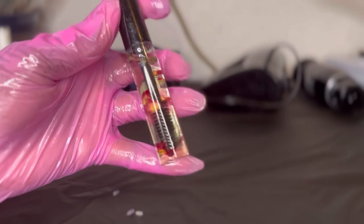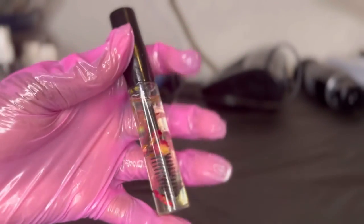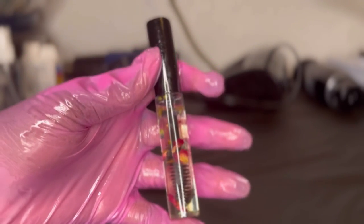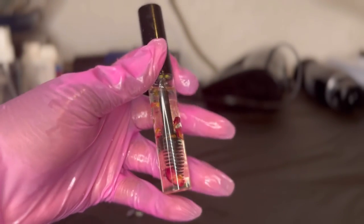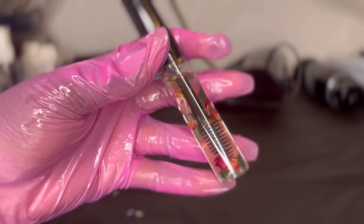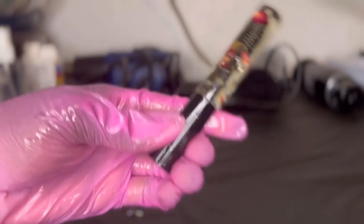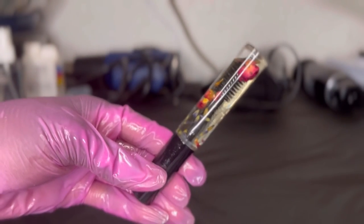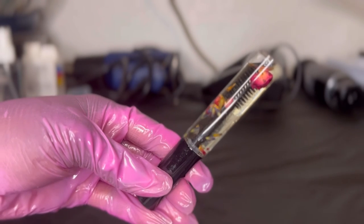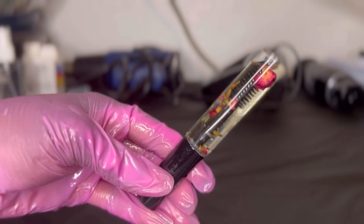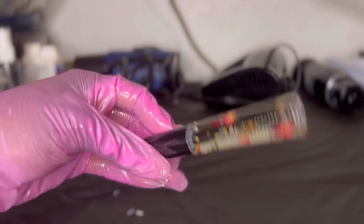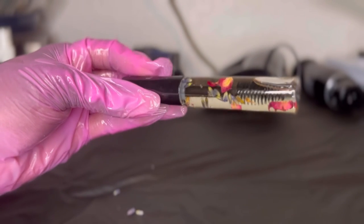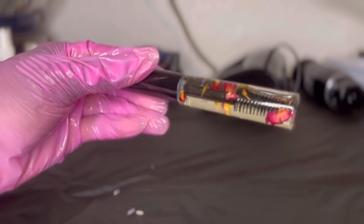So when it's all done this is what your eyebrow and eyelash serum looks like. It is kind of clear. It does have like a little yellow hue to it just because of the castor oil. But all in all yeah, this is what your rose and lavender eyelash and eyebrow serum will look like.